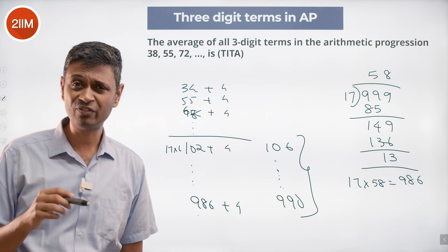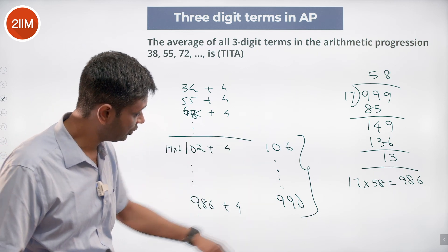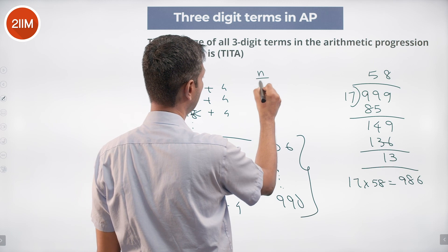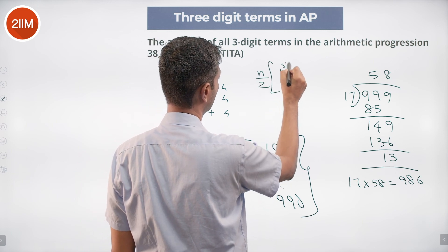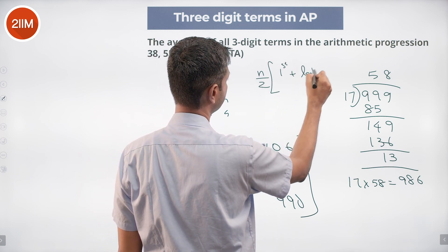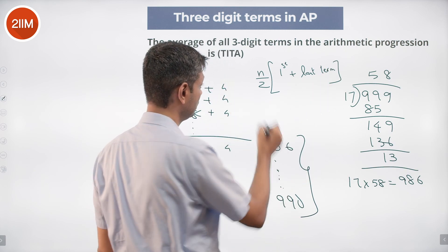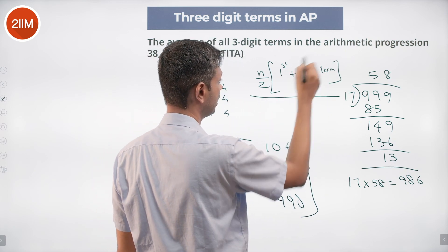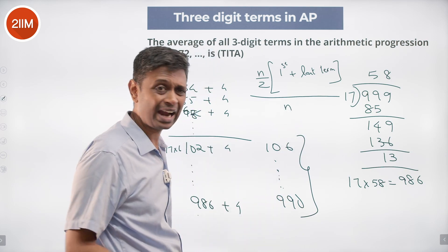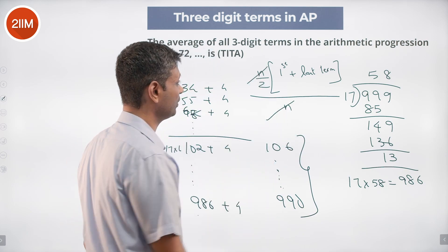Sum of all of these terms are going to be n by 2 into first term plus last term. Average of all of this would be n by 2, first term plus last term, divided by n. I don't need to find n. First term plus last term by 2. Average of first term and last term is the average of all the terms.